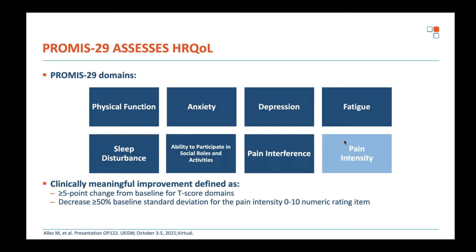New from UEG was quality of life data — the PROMIS-29 data. PROMIS stands for Patient-Reported Outcome Measurement Information System, and it assesses a variety of quality of life measures, similar to the IBDQ. These include physical function, sleep disturbance, fatigue, depression, anxiety, and pain intensity.